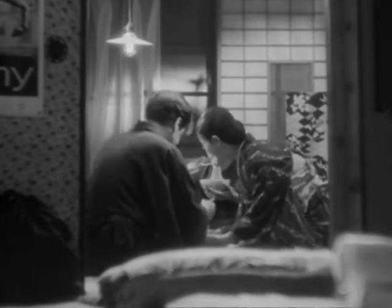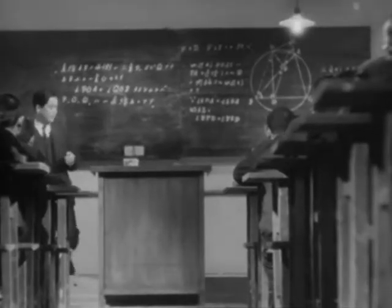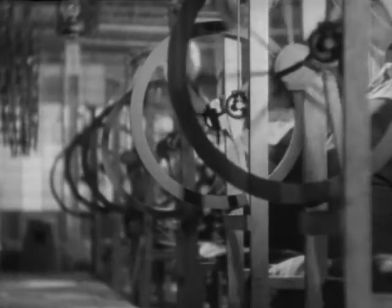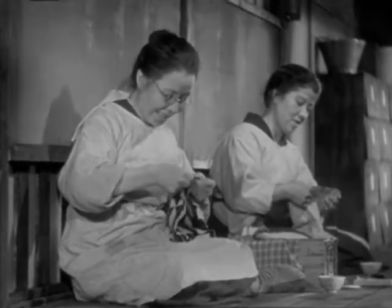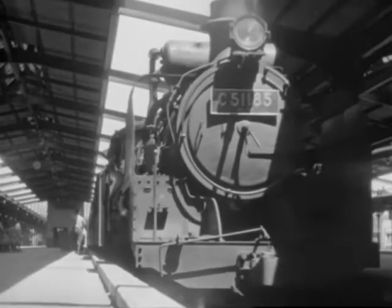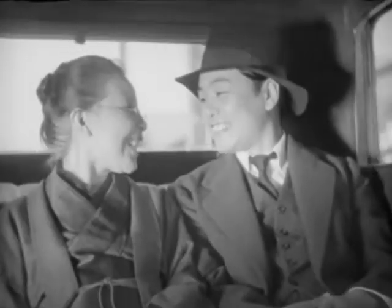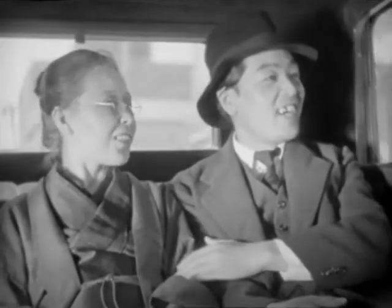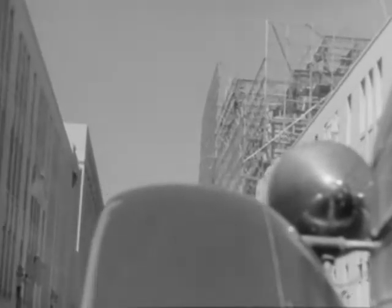Sometimes instead of forming a frame around the action, the mise-en-scène intrudes into the shot, obscuring the subject. The Only Son tells the story of Tsune, a widowed mother who sacrifices everything for her son's education. Years later, when she visits the now-grown Ryusuke in Tokyo, Tsune discovers that his life has turned out very differently than she'd hoped. In one early scene, Tsune arrives at the Tokyo station and is picked up by her son in a taxi. They make awkward small talk, and Ryusuke points out landmarks on the way home. But each time we cut to the outside, the image is dominated by the cab's massive fender, blocking our view of the city. Instead of a frame, we get almost the inverse — but it serves the same function of limiting what the audience can see.